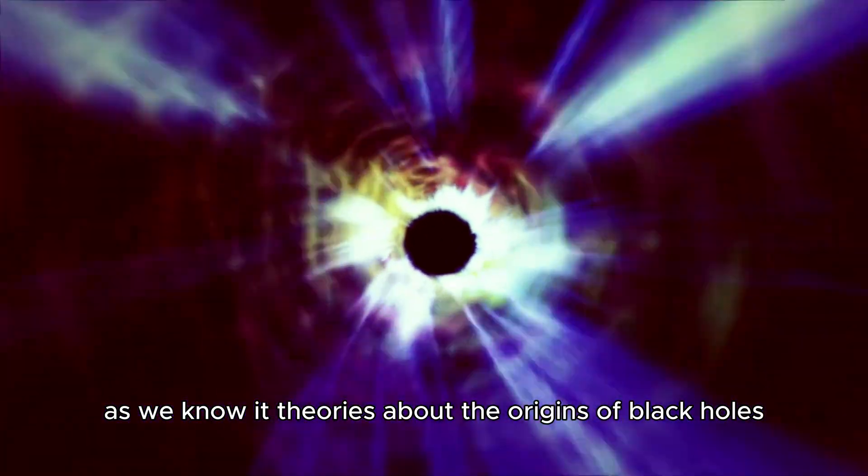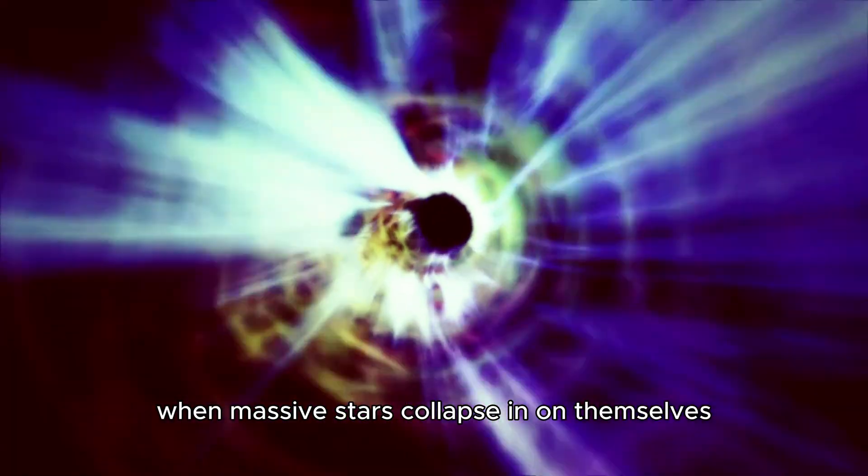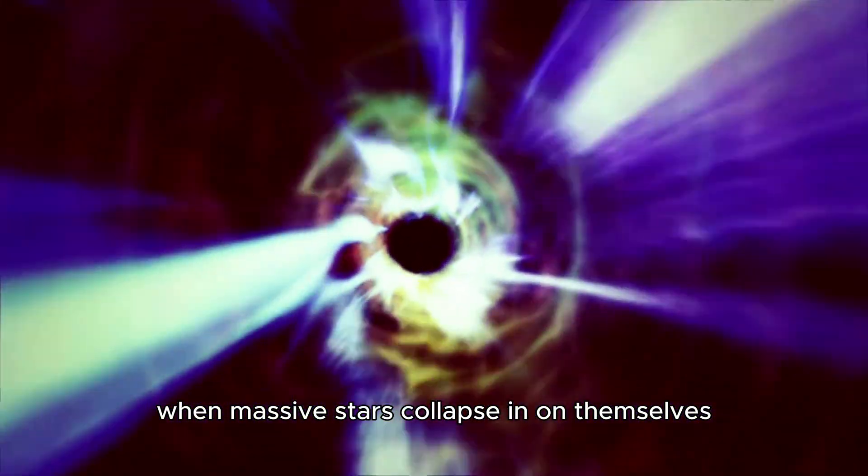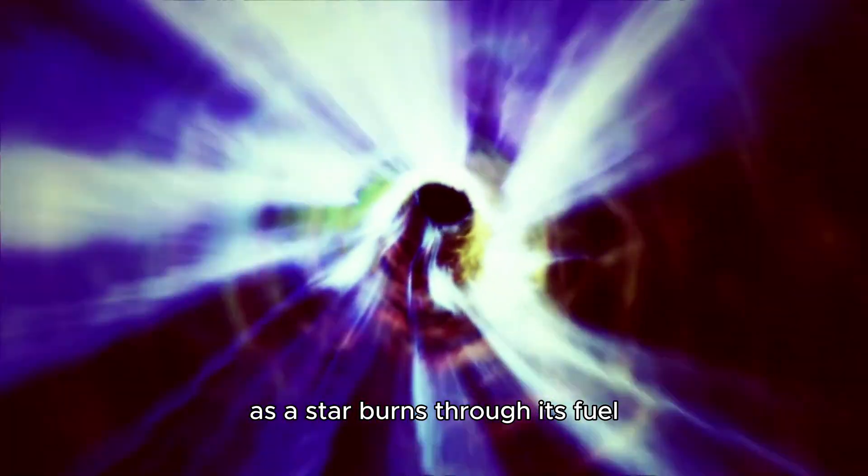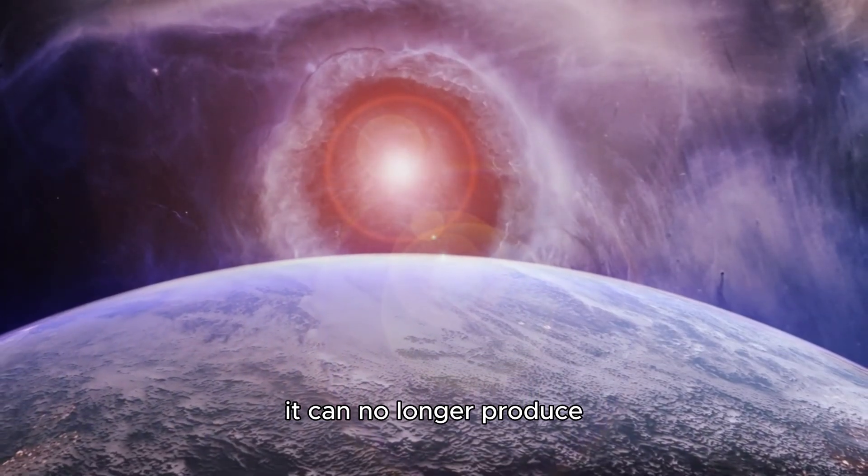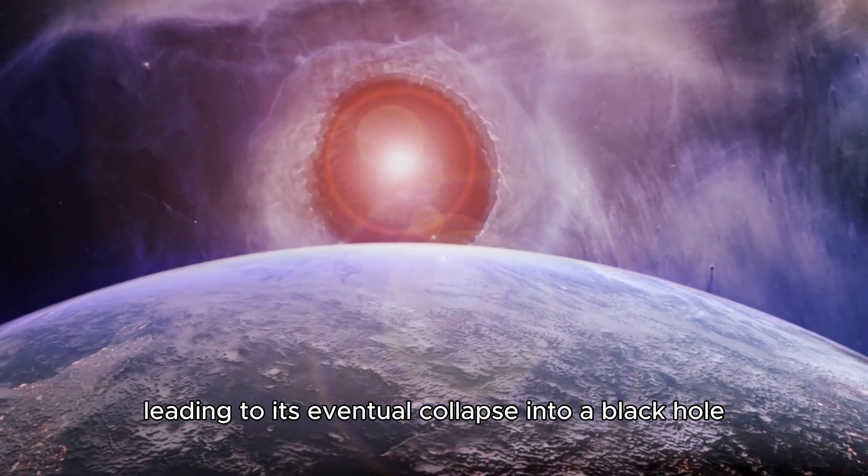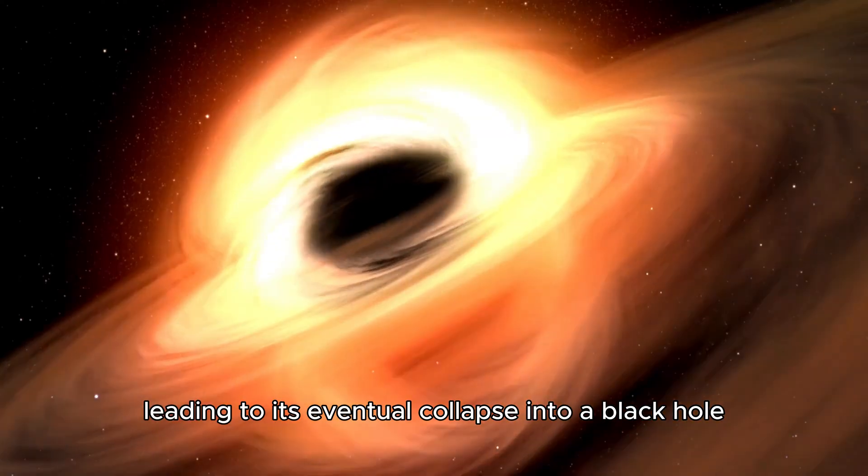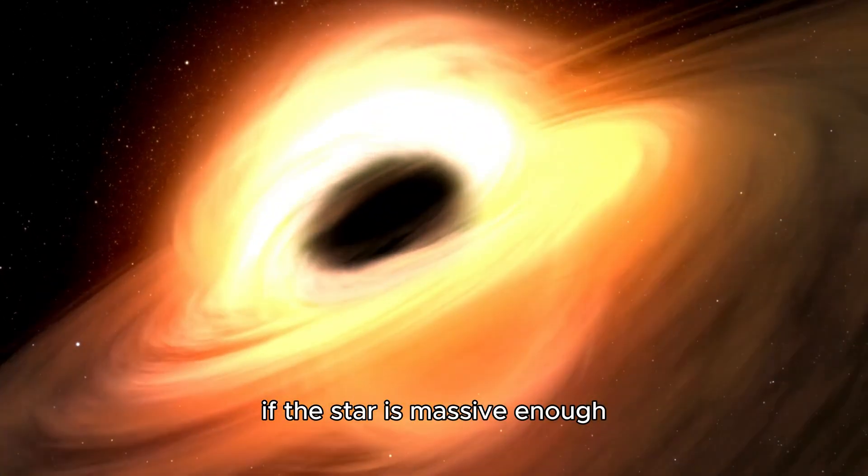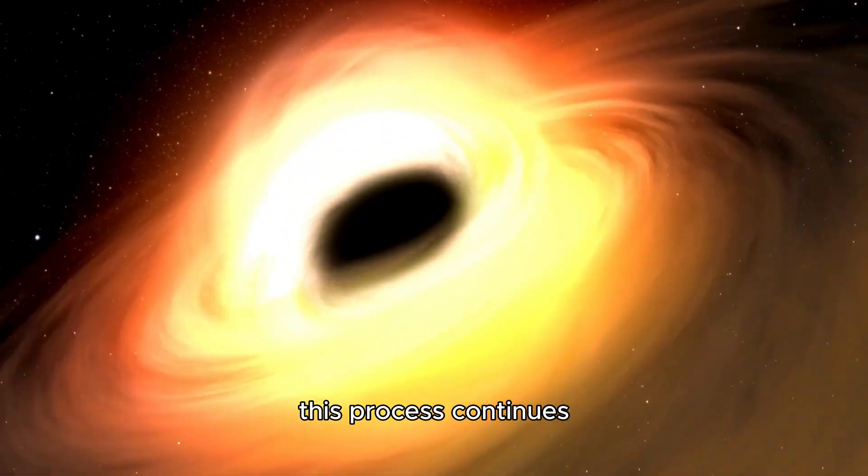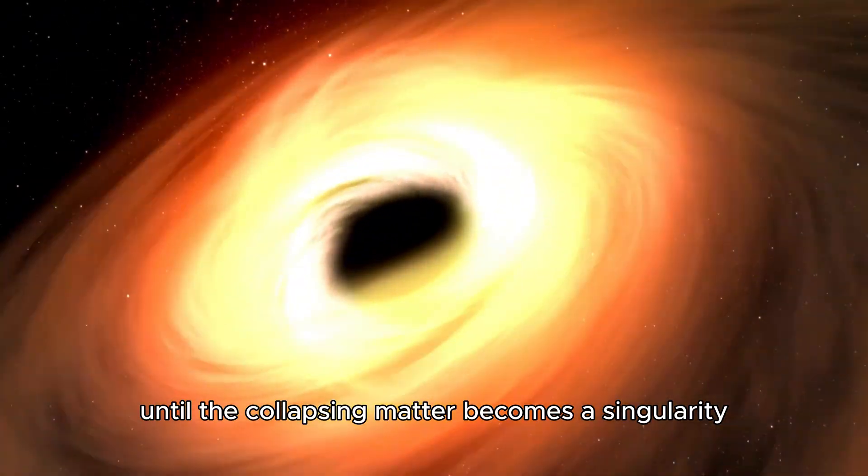When studying them, we must account for the breakdown of physics as we know it. Theories about the origins of black holes suggest that they may form when massive stars collapse in on themselves. As a star burns through its fuel, it can no longer produce enough energy to counterbalance the inward pull of gravity, leading to its eventual collapse into a black hole. If the star is massive enough, this process continues until the collapsing matter becomes a singularity.